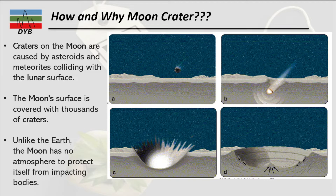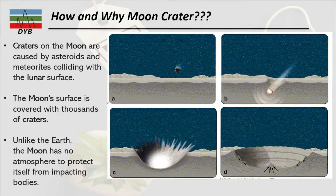If we look at how many craters we have on the surface of the moon, there are thousands. Unlike the Earth, the moon has no atmosphere to protect it from impacts. There are many meteorites which come into Earth's orbit, but because of the atmosphere, it protects the surface and reduces the speed of the meteorites.